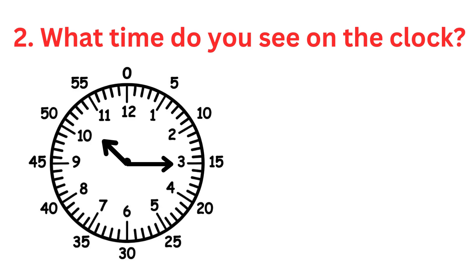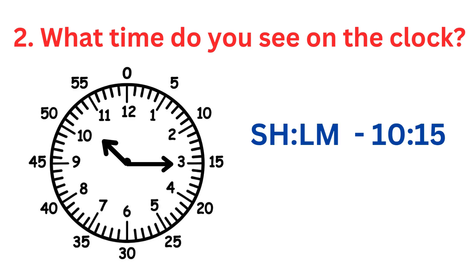What time do you see on the clock? Short hand near 10, long hand on 3 — that's 10:15, or we can say quarter past 10.